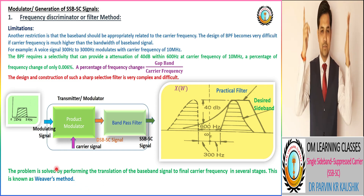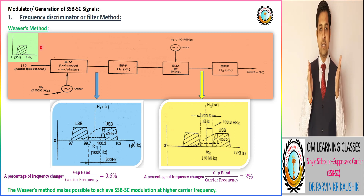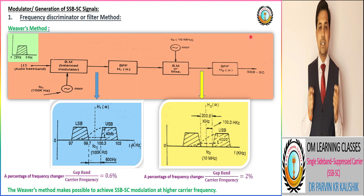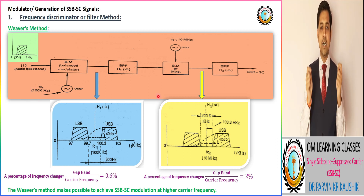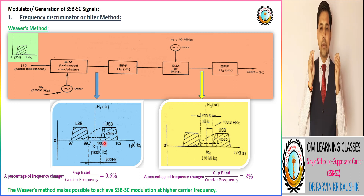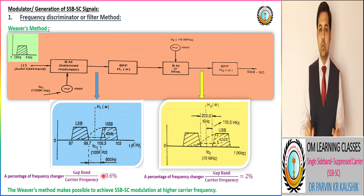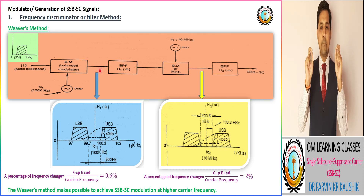This method is known as the Weaver method. As per the Weaver method applied to our given example, we do the frequency translation in two stages. In the first stage, we consider the carrier frequency equivalent to 100 kHz. In the final stage, we consider the operating final carrier frequency equivalent to 10 MHz. In the first stage, the percentage of frequency change — the ratio of 600 Hz to 100 kHz — gives a band gap ratio equivalent to 0.6%, which is practically feasible.